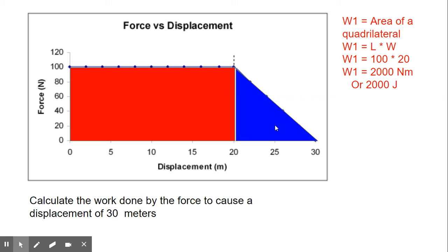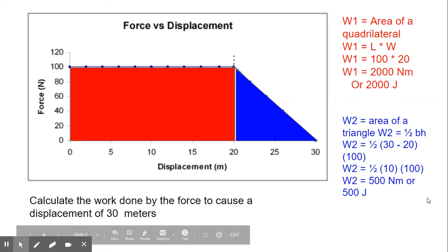Now let's look at the next area. So this area is a shape of a triangle. So W2 or work for area number two is the area of a triangle, which is one half base times height. So work for area two is one half, and your base is only from 20 to 30. So when you are given this kind of reading, you subtract final minus initial. So 30 minus 20 is here. And then your height is the same, it's 100. So one half times 10 from 30 minus 20 times 100 is equal to 500 newton meters, or 500 joules.